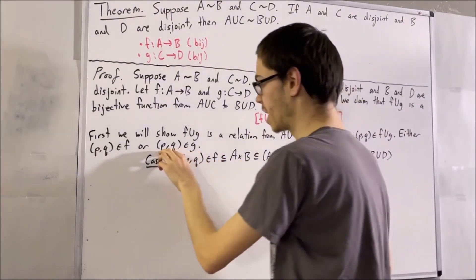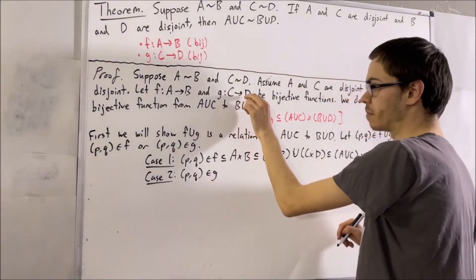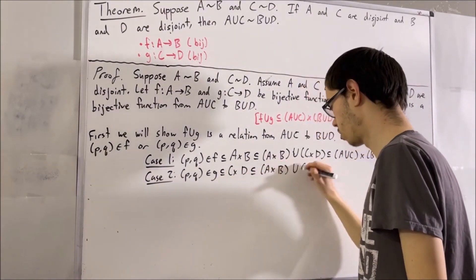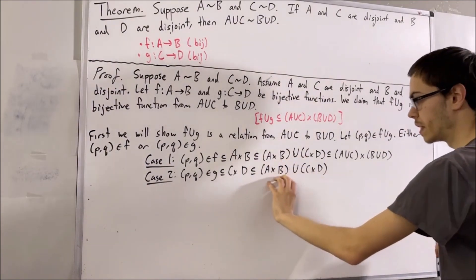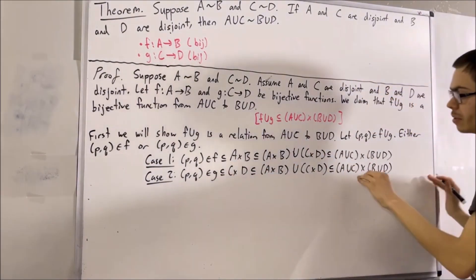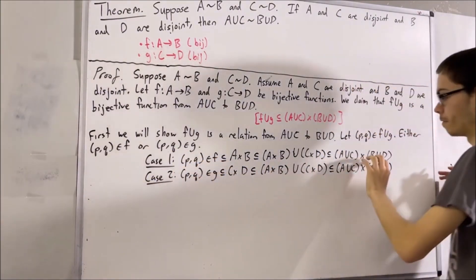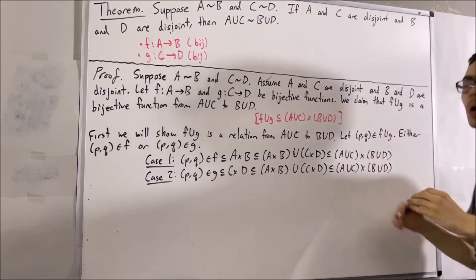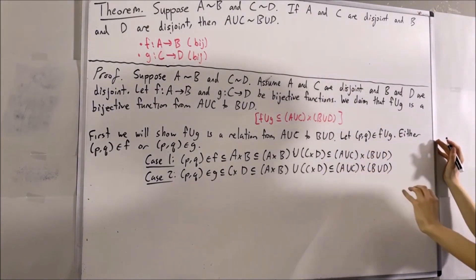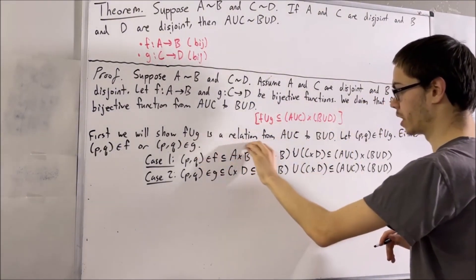In case two, (P, Q) is an element of G. G is a subset of C×D, and C×D is a subset of A×B ∪ C×D, which is a subset of (A∪C)×(B∪D). So (P, Q) is an element of (A∪C)×(B∪D). In either case, (P, Q) is an element of (A∪C)×(B∪D). We started with an arbitrary element of F∪G and deduced it is also in (A∪C)×(B∪D), proving that F∪G is a relation from A∪C to B∪D.